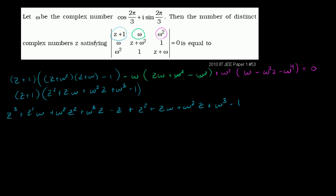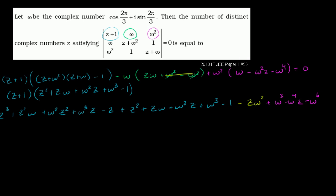Simplifying the green terms — those cancelled, leaving just minus z·ω². In magenta we have plus ω³, minus ω³z. Then from the ω² term: ω²×ω² gives ω⁴z, and ω²×ω⁴ is ω⁶, with a negative sign giving minus ω⁶. This whole thing needs to equal zero.